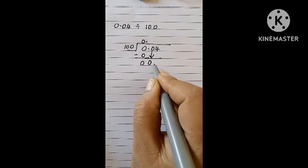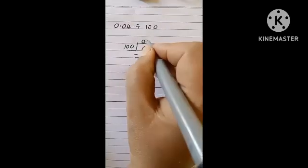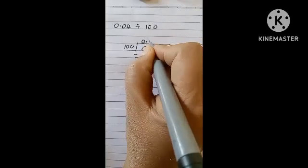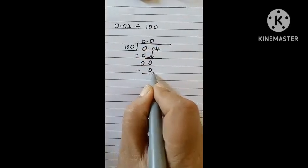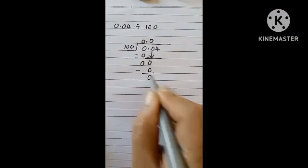Now, how many times does this 0 go by 100? 0 times. So, 100 times 0 is 0. Subtract 0 by 0, you get 0.